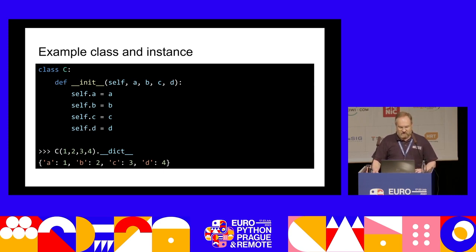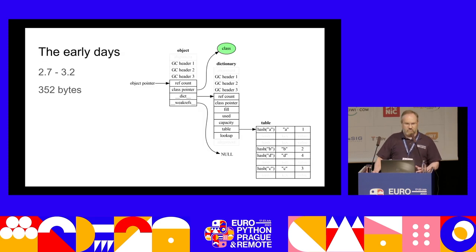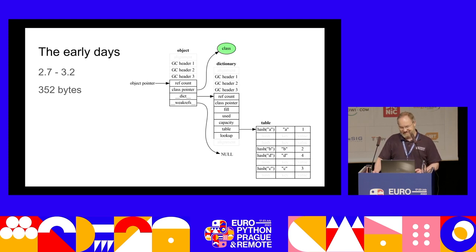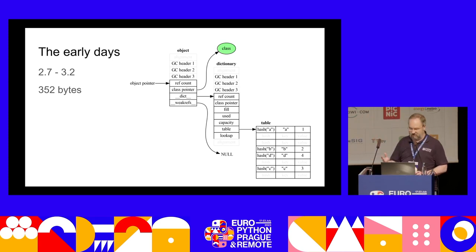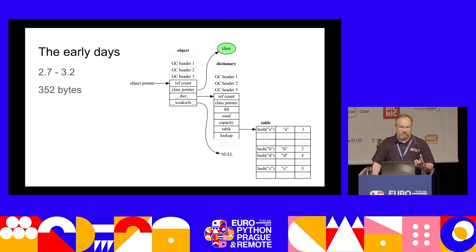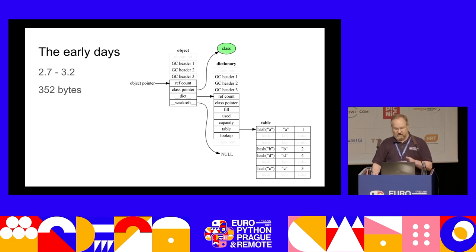Going back to Python 2.7 and 3.2, this is how the object was laid out in memory — there's a lot of stuff for just four attributes. On a 64-bit machine, that original layout is 352 bytes, including the object, the dictionary, and all the ancillary data for keeping track of everything.